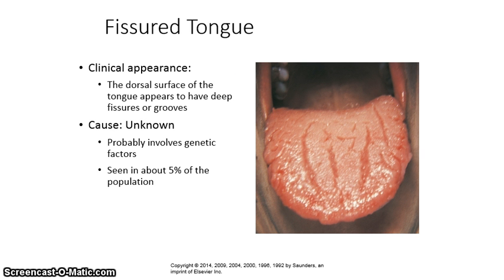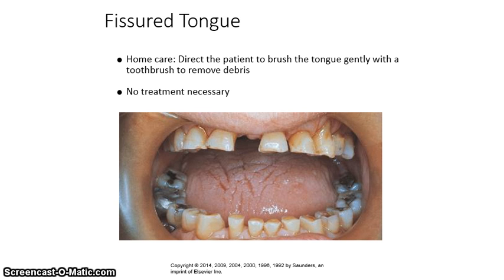In fissured tongue, the dorsal surface of the tongue appears to have deep fissures or grooves. The cause is apparently unknown; however, some sources say it is related to a vitamin B deficiency. It probably also involves genetic factors and is seen in about 5% of the population. For home care, patients are directed to brush the tongue gently with a toothbrush to remove debris that may become embedded in the grooves. No treatment is generally necessary.